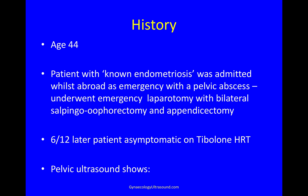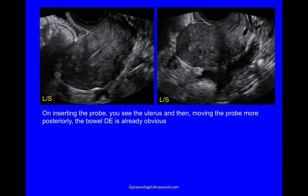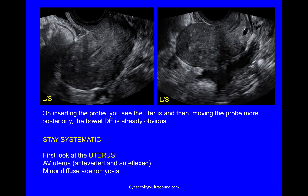When I scanned her I could see the following, and the point of this video is we'll do the scan as though we're doing it together. The first view is a longitudinal view of the uterus, and as you insert the probe you can see the uterus, but then moving the probe slightly more posteriorly you can immediately see this large plaque of bowel endometriosis. But even though it's already really obvious, try and stay systematic. First let's look at the uterus: it's anteverted and antiflexed, and there is some posterior thickening here and some features of minor diffuse adenomyosis.